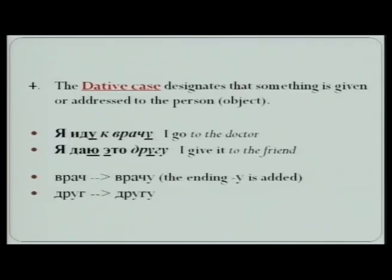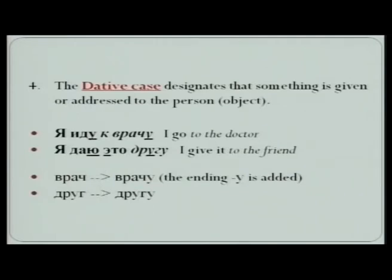The dative case designates that something is given or addressed to the person which acts as an object in the sentence. For example, I go to the doctor. Whenever there is a noun of masculine gender, it changes into -u, like vrach changes into vracu and drug changes into drugu.